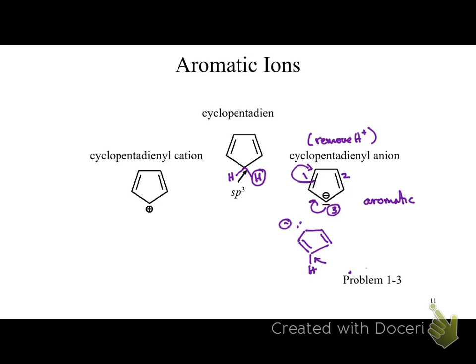For the cyclopentadienyl cation, we removed the hydrogen with its electrons, leaving an sp2 carbon with an empty p orbital. This is actually anti-aromatic because there are only two electron pairs involved — an even number — so the cyclopentadienyl cation is anti-aromatic.